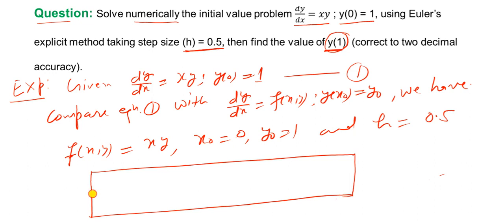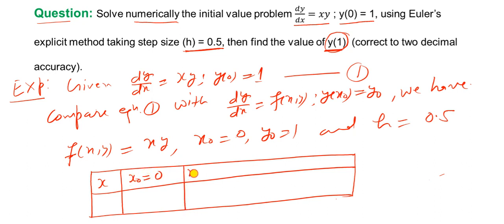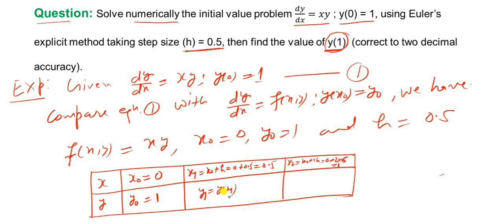The x values: initially x0 = 0. Then x1 = x0 + h = 0 + 0.5 = 0.5. Then x2 = x0 + 2h = 0 + 2(0.5) = 1. The y values: initially y0 = 1 (given). Then compute y1 = y(x1) and y2 = y(x2). Since x2 = 1, computing y2 means finding y at x = 1, which is our goal.